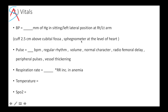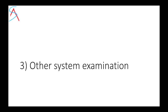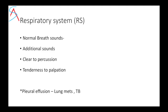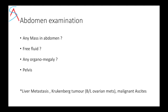Then present the vitals: BP, pulse, respiratory rate, temperature, and SpO2. Other system examination includes CVS and RS — for RS, look for any lung metastasis, pulmonary TB, or pleural effusion. Then do abdominal examination specifically for free fluid, organomegaly, or any pelvic tumor, because there could be liver metastasis or Krukenberg tumor where bilateral ovarian metastasis is present.